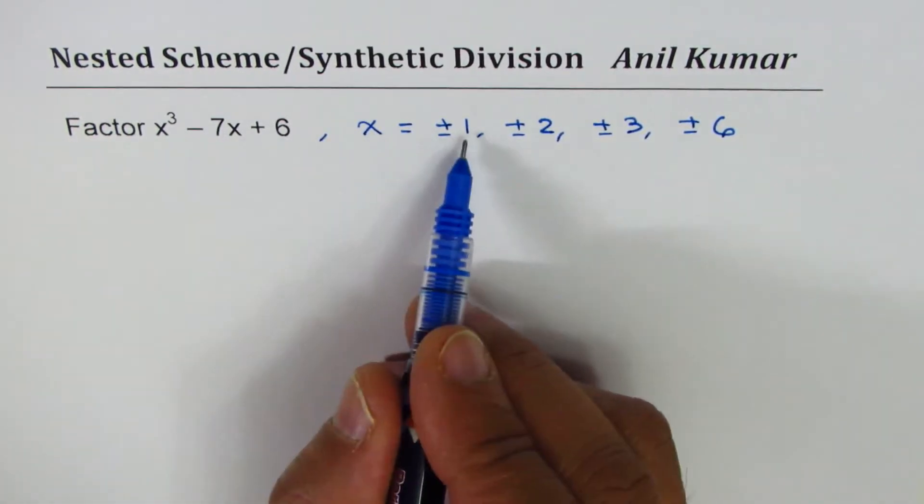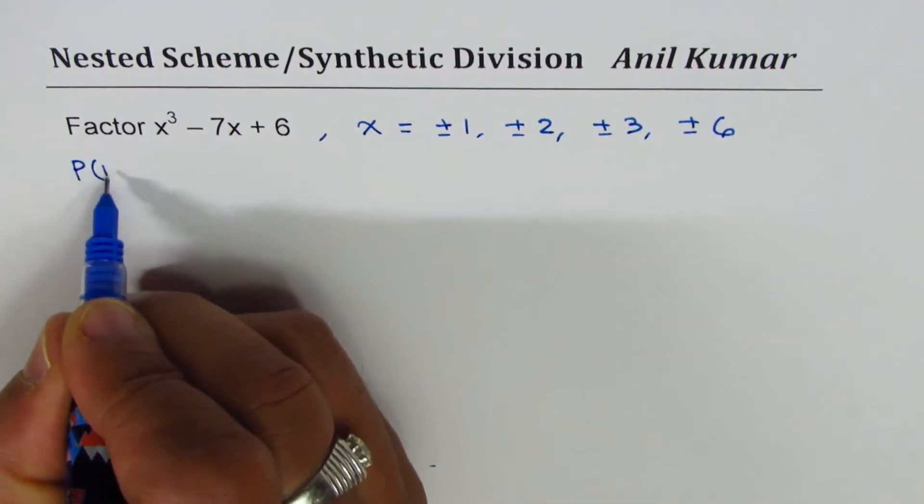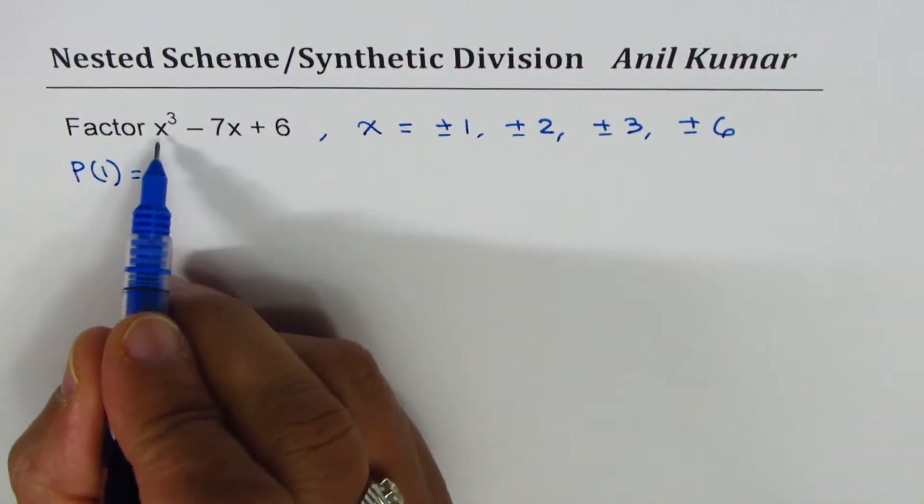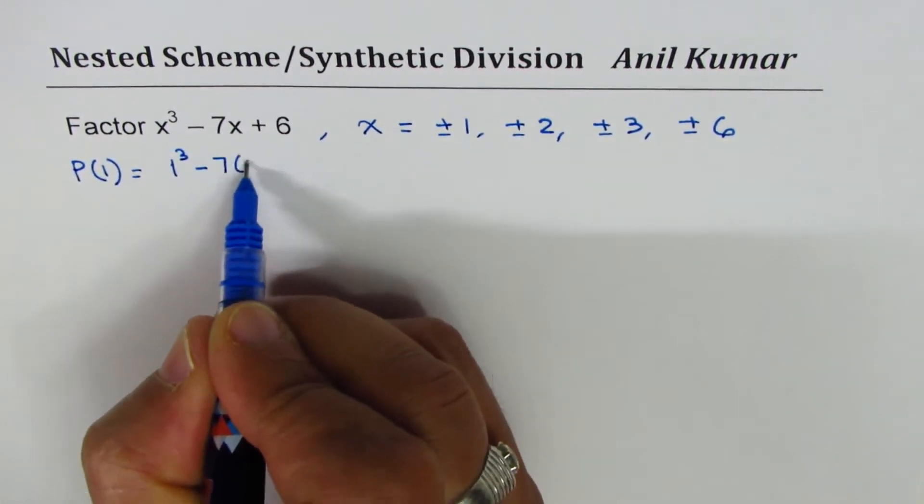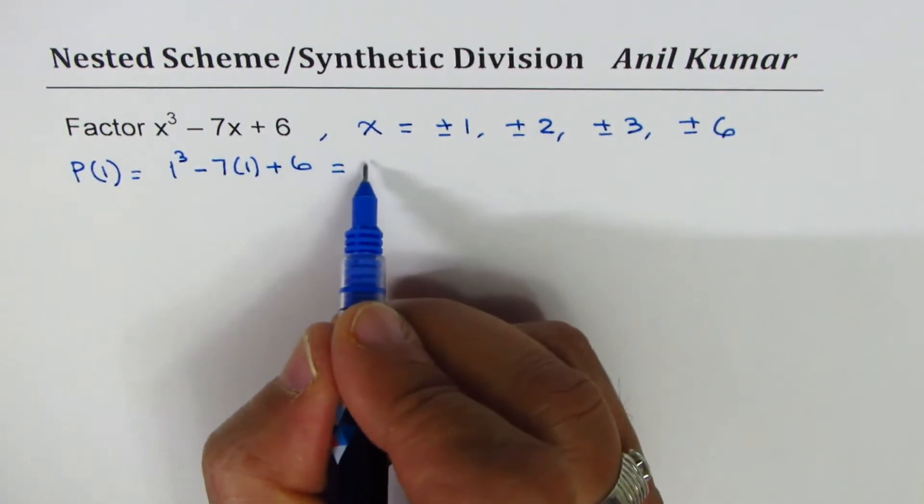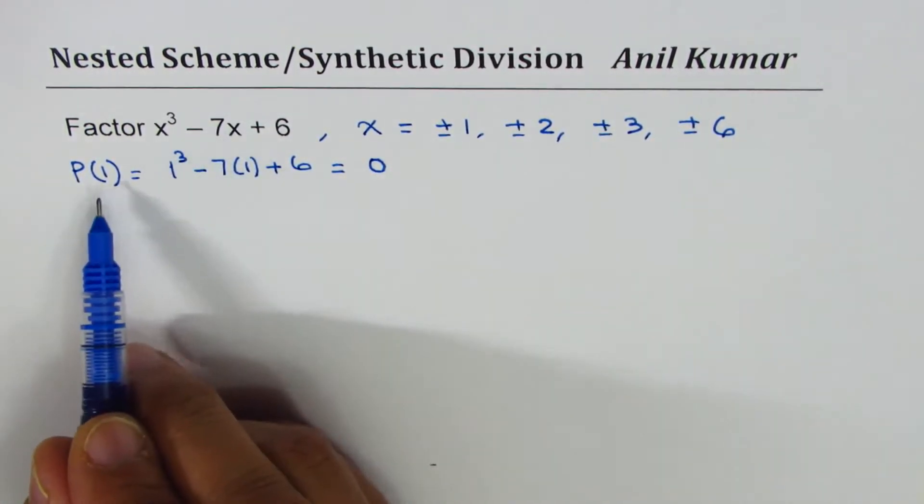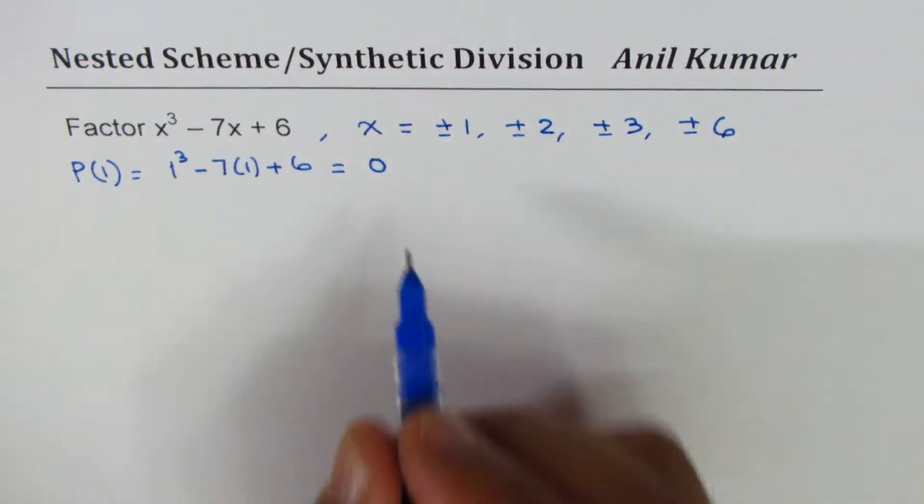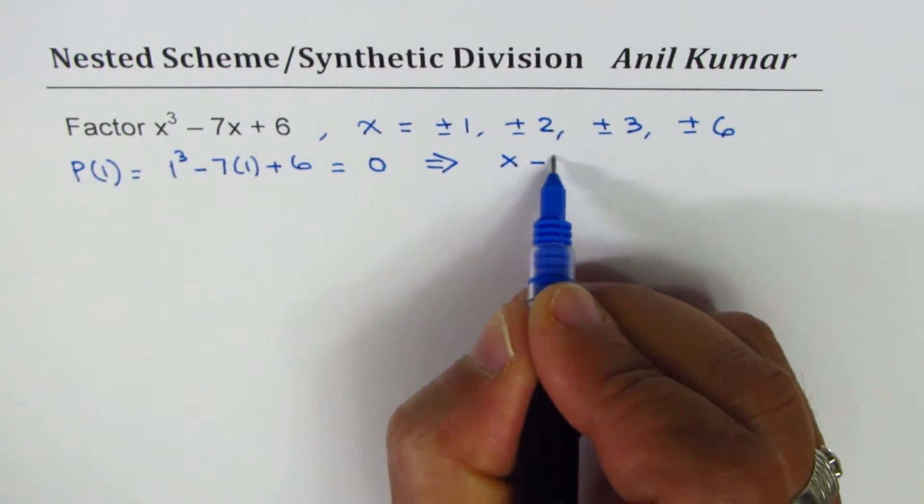So let's write down what is the value of this function for x equals to 1. So if I substitute 1 here, we get 1 cubed minus 7 times 1 plus 6, and that is indeed equal to 0. So if the value of the polynomial for 1 is 0, that means that x minus 1 is a factor.